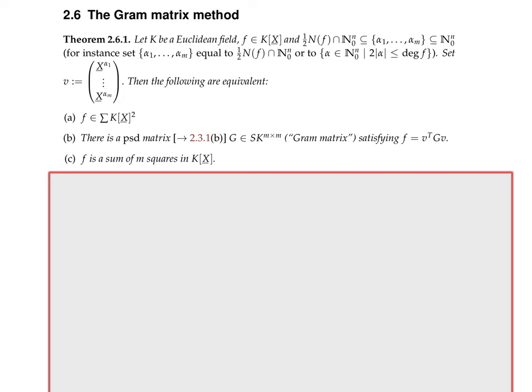f is the sum of m squares is a third condition — a bit finer. Where m is the cardinality of one half the Newton polytope intersected with tuples of non-negative integers. We have already seen this theorem in a special case, namely when f is a quadratic form. In that case, the Newton polytope is contained in the set where the sum of components equals two.